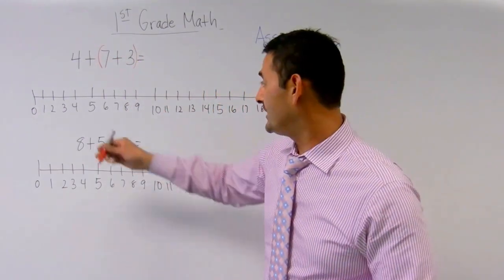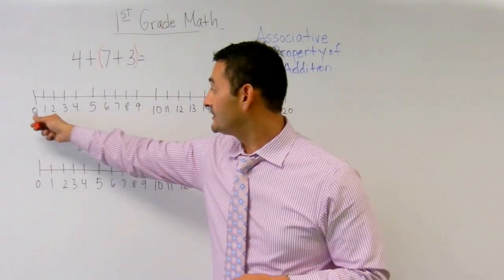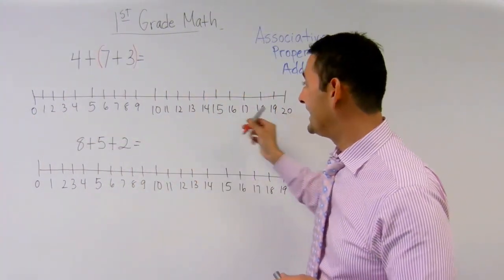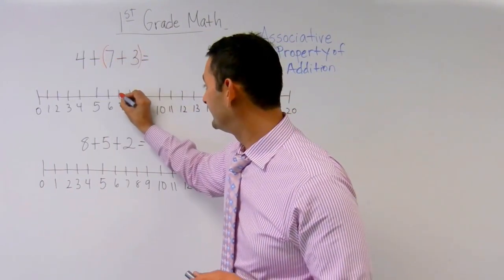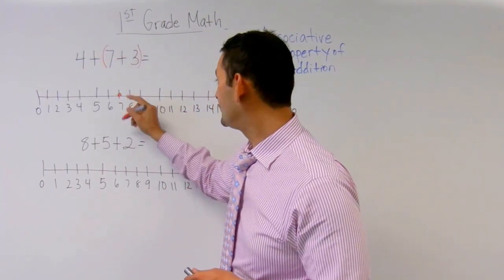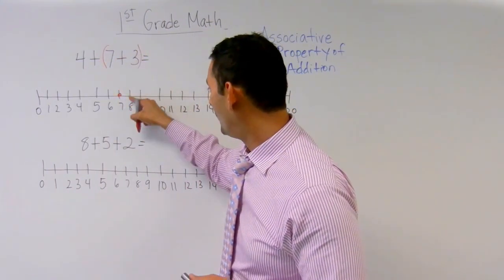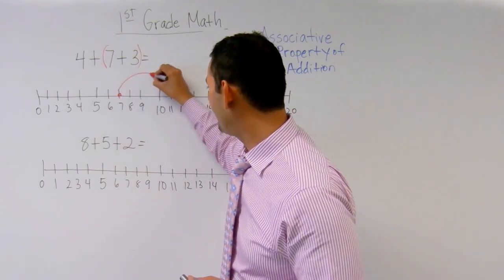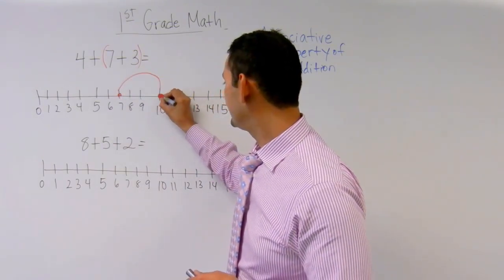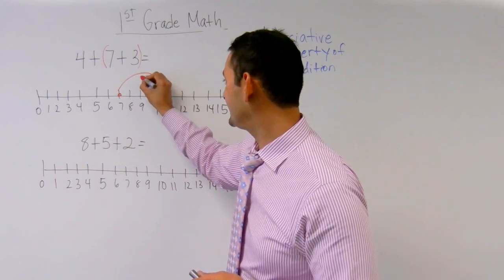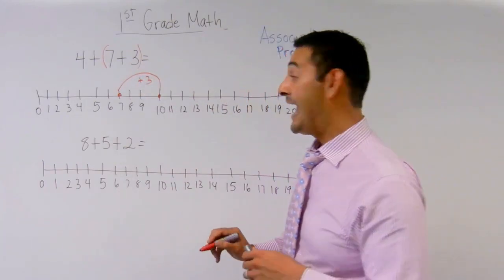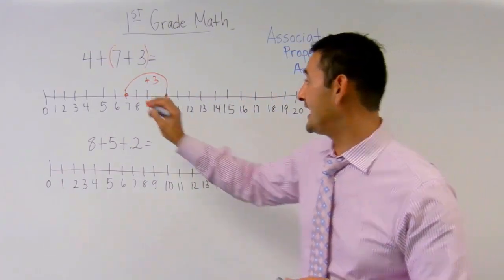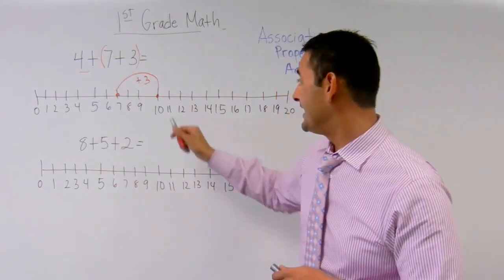So what I'm going to do here is I've got this number line from 0 all the way to 20. And I'm going to start with 7. And I'm going to jump to 3. 1, 2, 3. So I know that this is going to be 10. So I just added 3 right there.